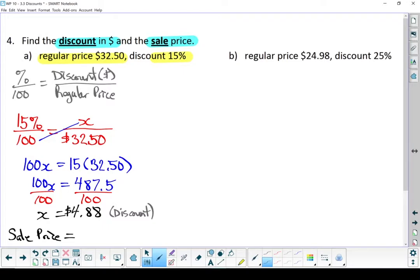To find our sale price, we're going to take the regular price and subtract the discount. And we end up with a sale price of $27.62.